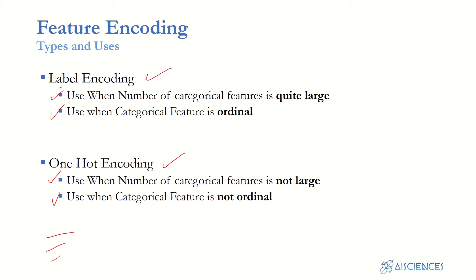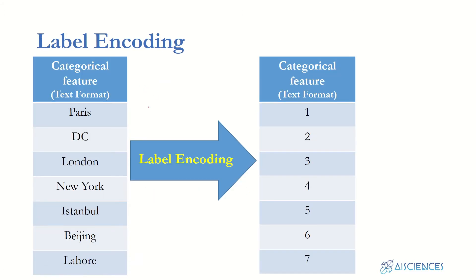In label encoding, just as we discussed, we convert categorical features by assigning a code to every unique category. So if we have seven categorical values, we assign seven different codes. Whenever Paris appears again, we assign the same code to it. Now let's do some hands-on practice — it's not very difficult to implement in Python.